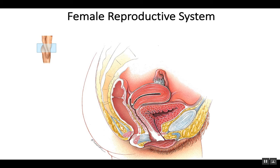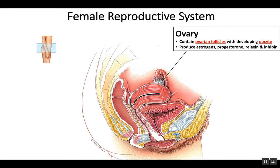The organs of the female reproductive system include the ovaries, which are the female gonads. We'll be looking inside of each ovary where we'll find the ovarian follicles. Ovarian follicles are containers where the oocyte, or the egg, develops. The ovary is also the site of production of estrogens, progesterone, relaxin, and inhibin.